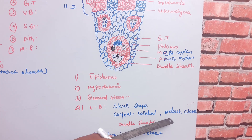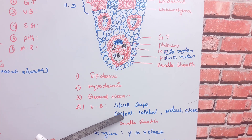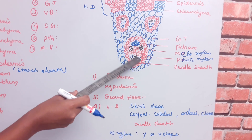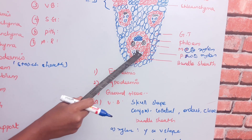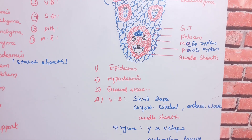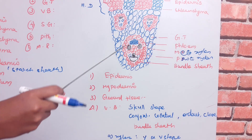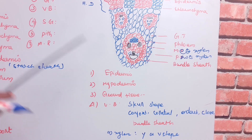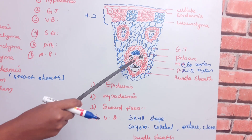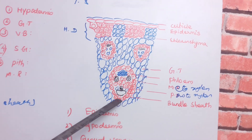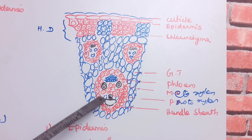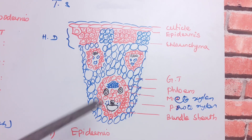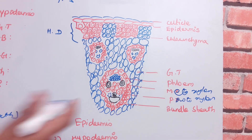The vascular bundle in the monocot is conjoint, collateral, and endarch — similar to the dicot. The xylem is at the center and the phloem is at the periphery. The vascular bundle is surrounded by a bundle sheath made up of sclerenchyma cells with 3 to 4 layers.